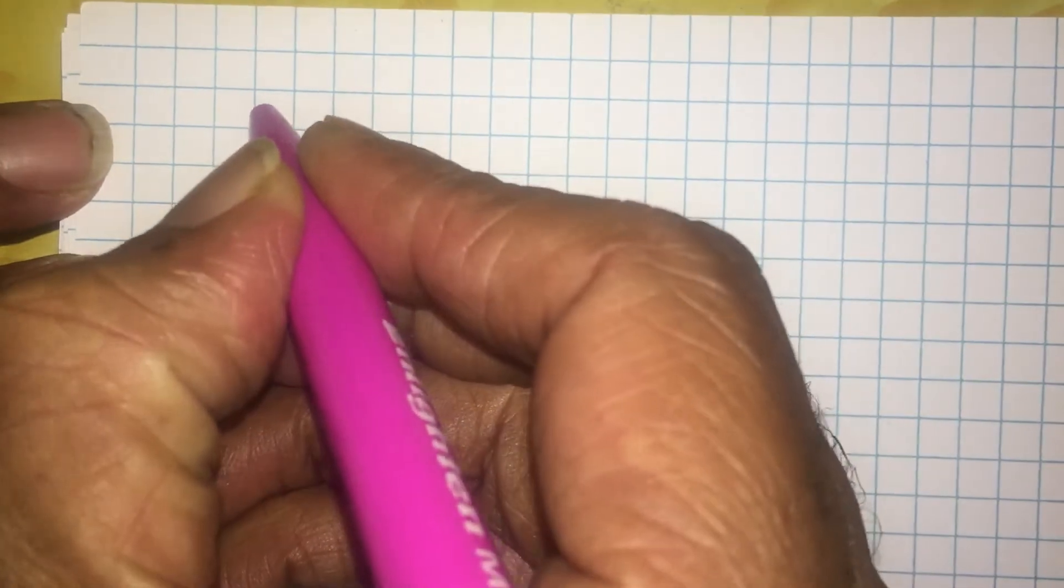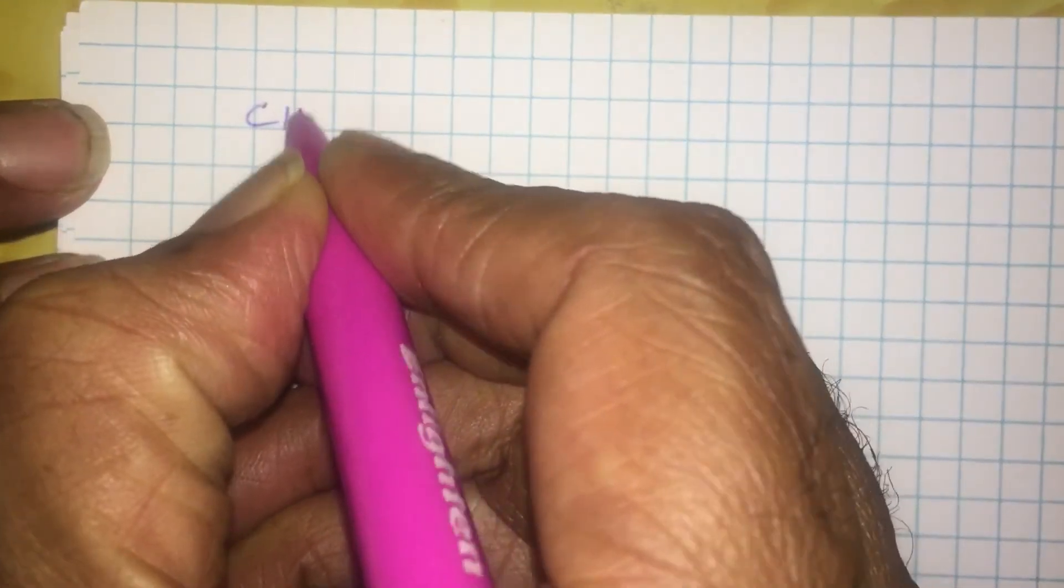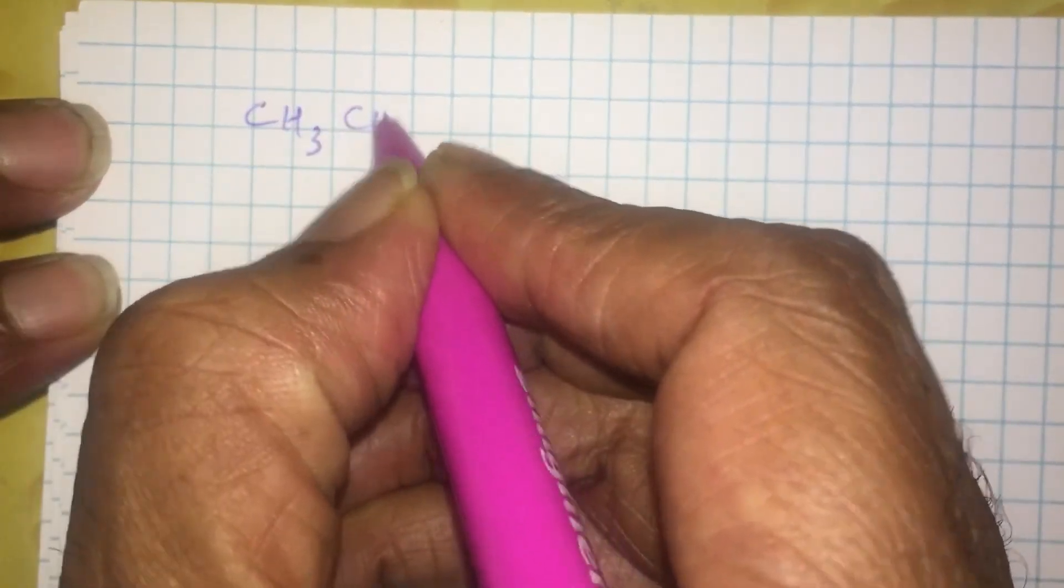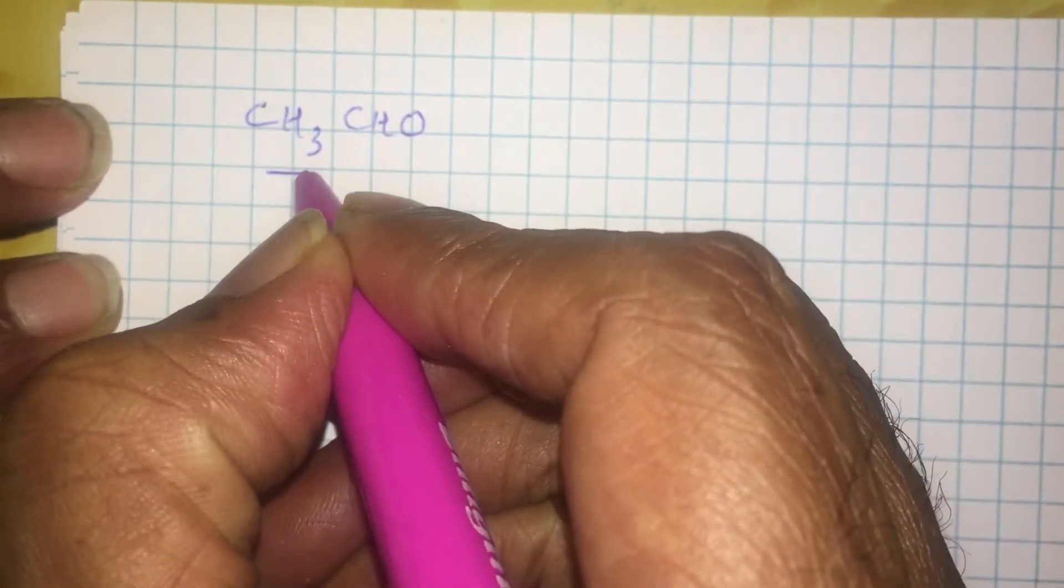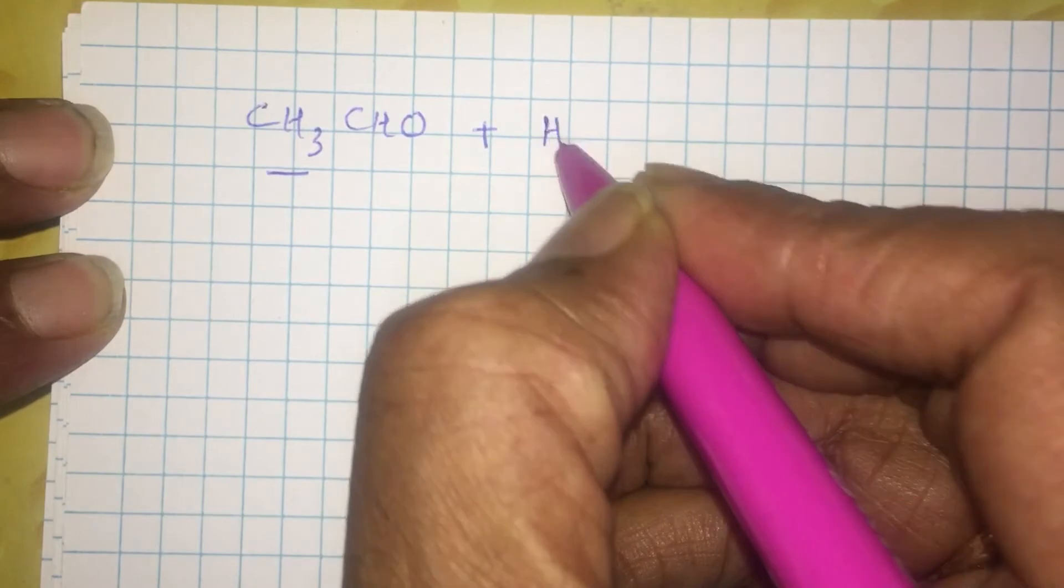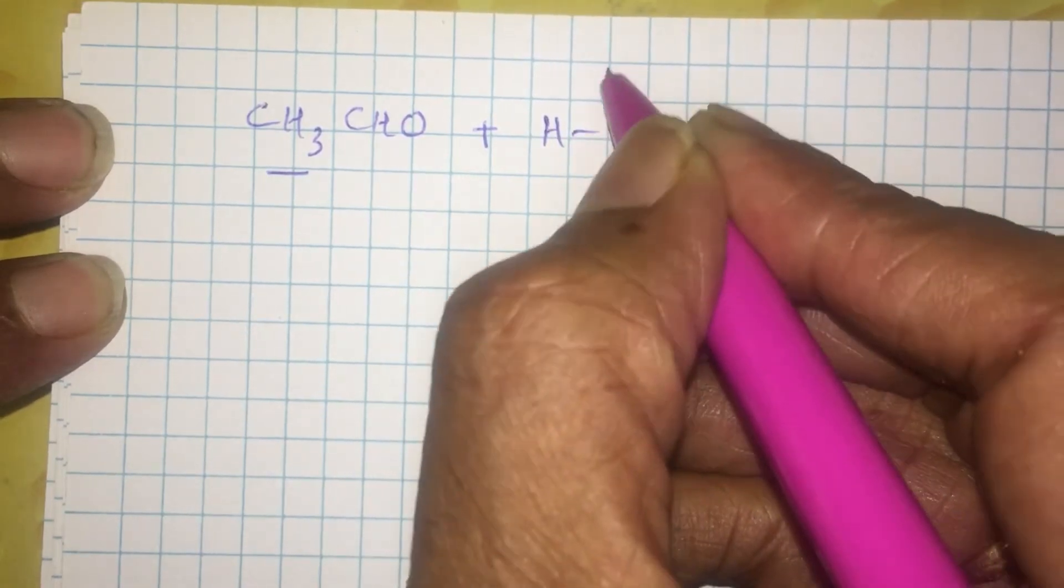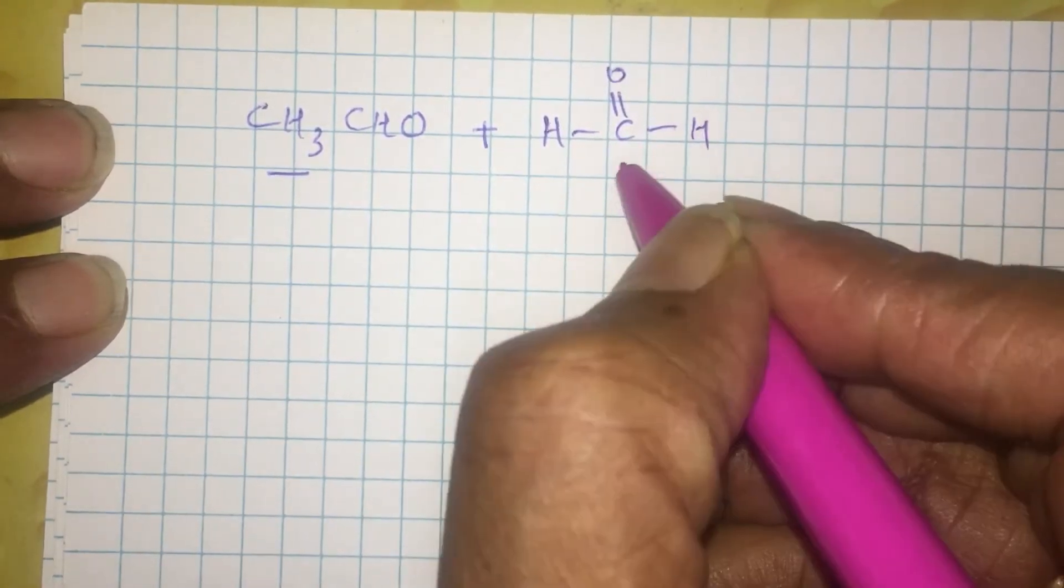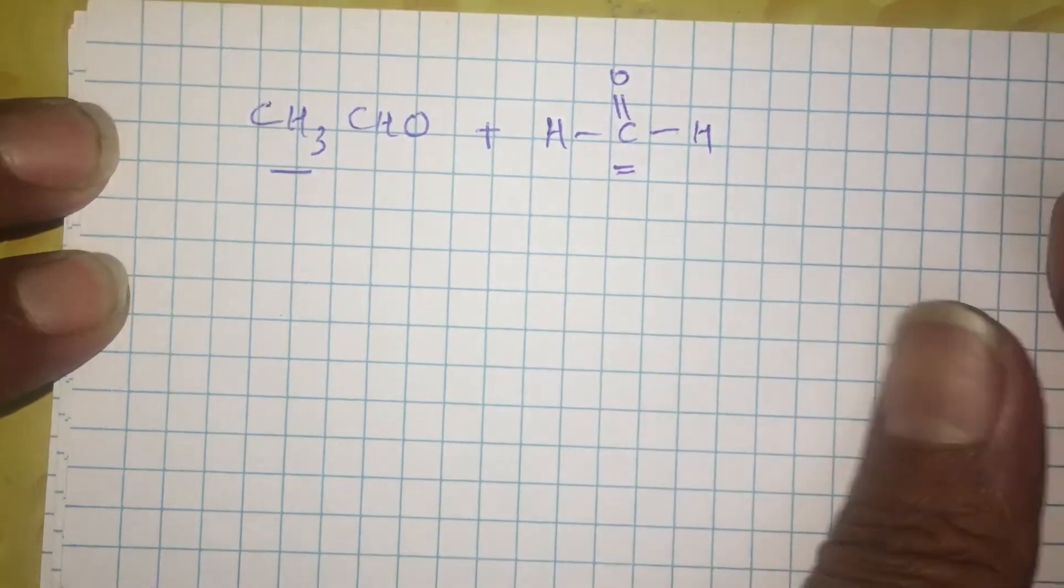Welcome to this final session on aldol condensation. This is cross-aldol condensation we are looking at. Suppose you are taking an aldehyde that has alpha hydrogens and also another aldehyde that does not have any alpha hydrogens. This has no alpha carbon at all.